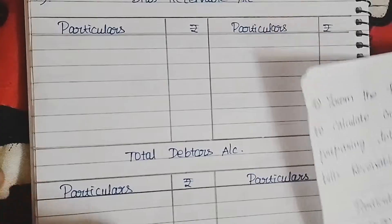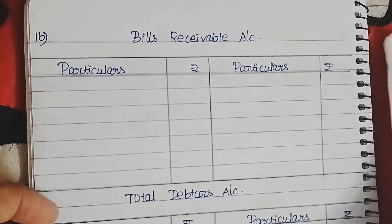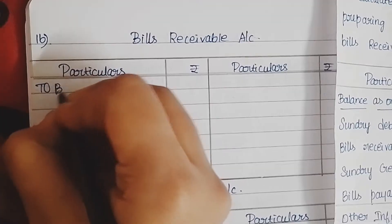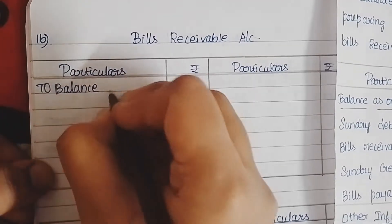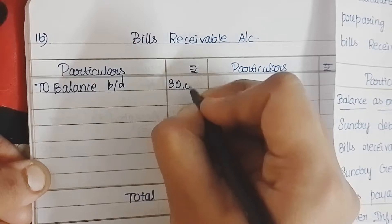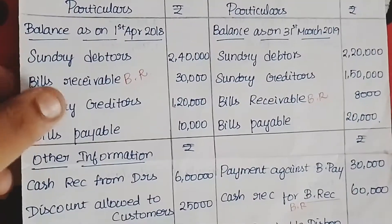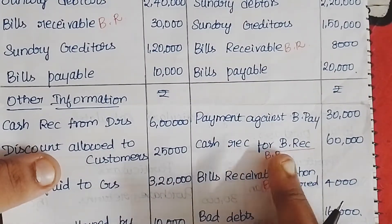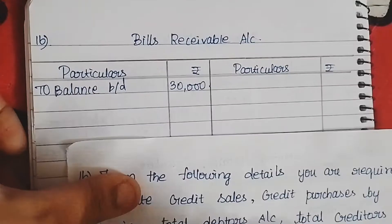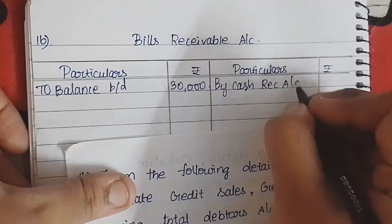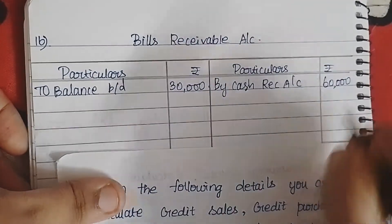So first, bills receivable account — let's start. If you are ready for the format, the opening balance of bills receivable is 30,000. To balance brought down — opening balance is 30,000. Cash received for bills receivable: 60,000. By cash received account — 60,000 rupees.